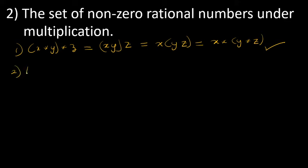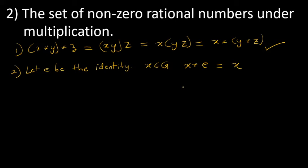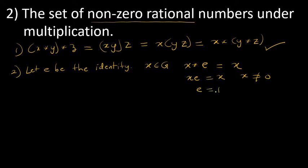Let's find out what the identity is. Let E be the identity. If you take any element x in G and do the star operation with E, you should end up with the same element x. So x times E equals x. Since x and E are rational numbers and x is not equal to zero, you can divide both sides by x, and E equals 1. So in this case the identity is 1.